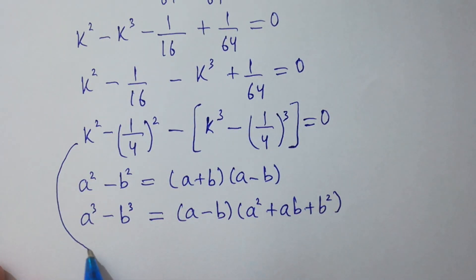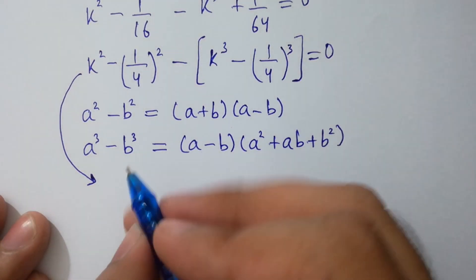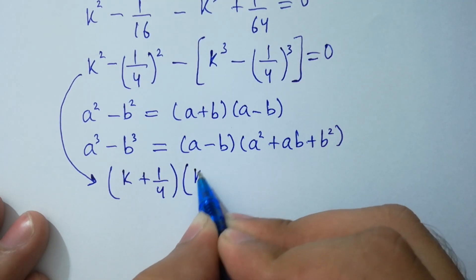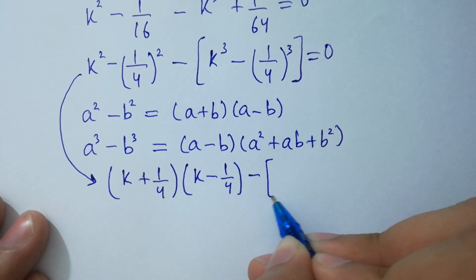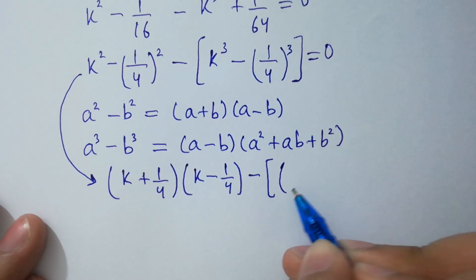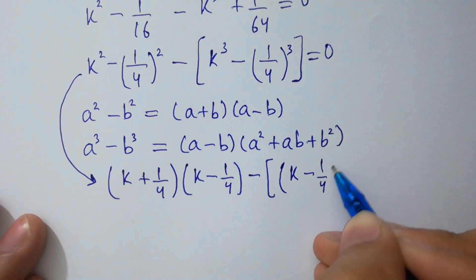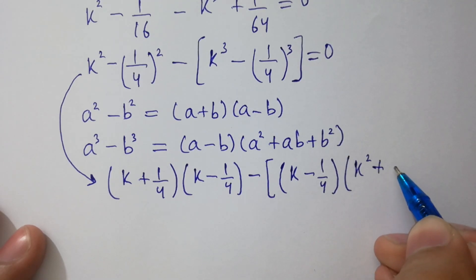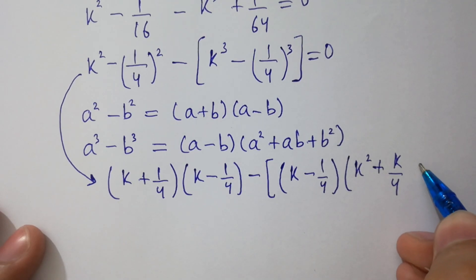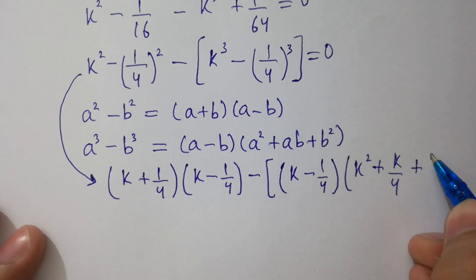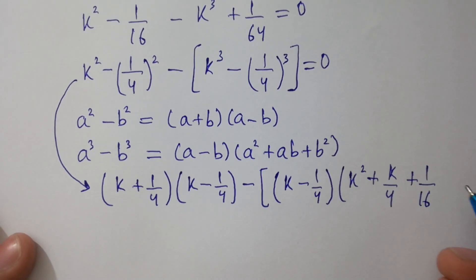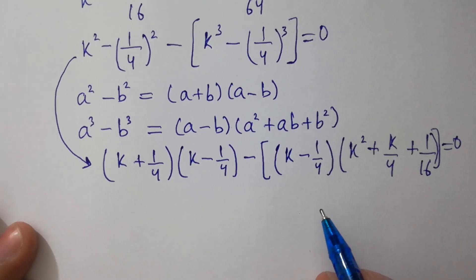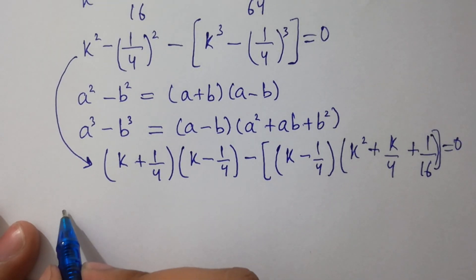So this equation becomes: k squared minus 1 over 4 squared, factored as k minus 1 over 4 times k plus 1 over 4, and k cubed minus 1 over 4 cubed factored as k minus 1 over 4 times k squared plus k times 1 over 4 plus 1 over 16, equal to 0.